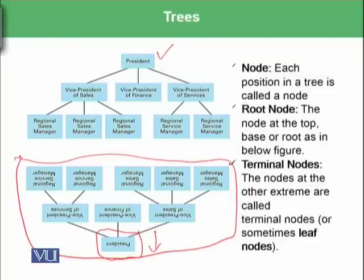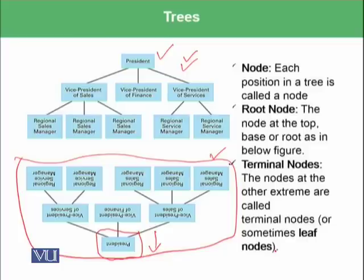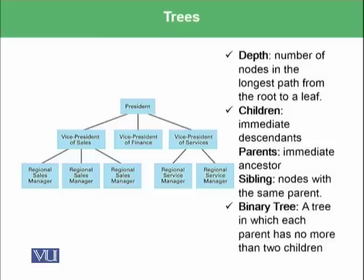To conceptualize, manipulate data, and add or delete nodes, we display trees with the root node at the top — just to familiarize you with why we call it the root node. The nodes at the other extreme are called terminal nodes, sometimes called leaf nodes. The depth is the number of nodes in the longest path from the root to a leaf — you can also think of it as the number of layers in the tree, for example: one, two, three.